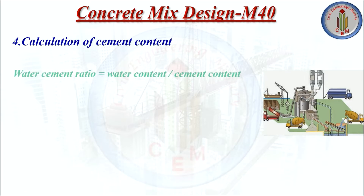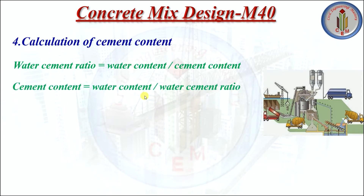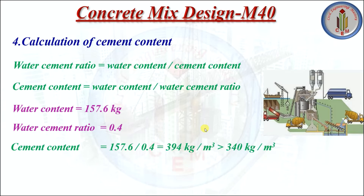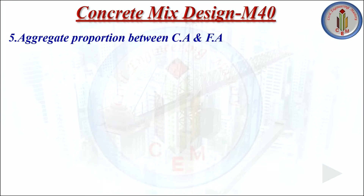Step 4 is calculation of cement content. Water cement ratio = water content / cement content. Therefore cement content = water content / water cement ratio = 157.6 / 0.4 = 394 kg/m³. This is greater than the minimum cement content of 340 kg/m³ and does not exceed the maximum of 450 kg/m³ as per IS 456:2000. So cement content = 394 kg/m³.